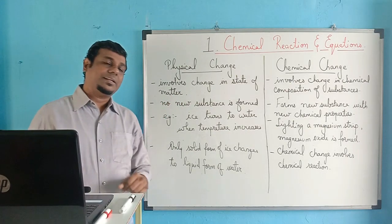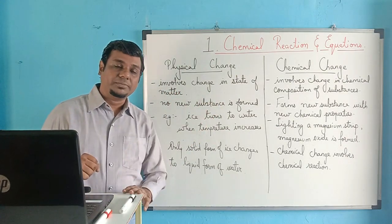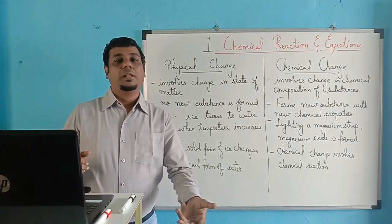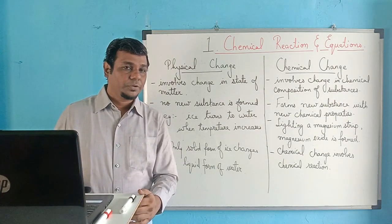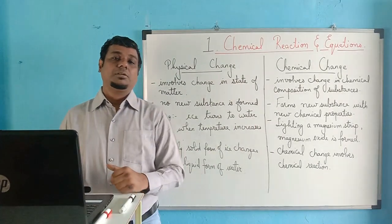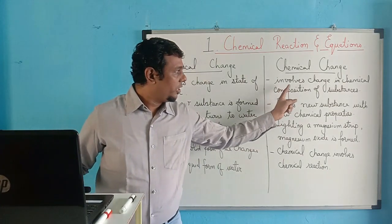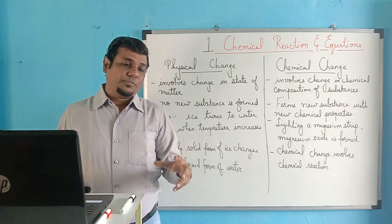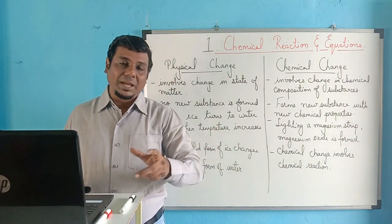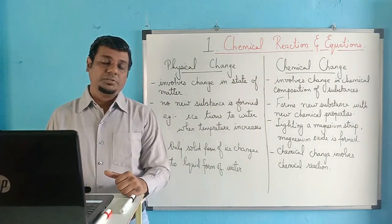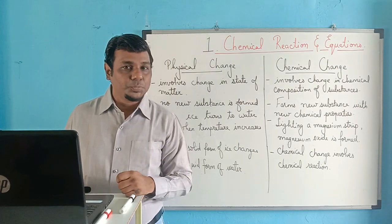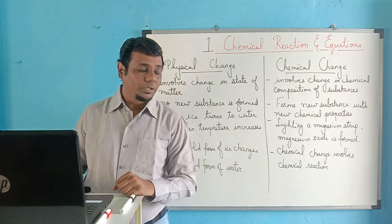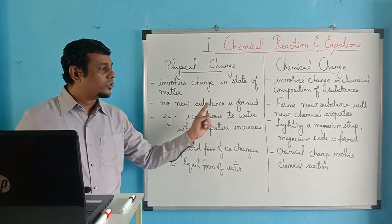As we have studied earlier in 9th standard, physical change involves change in state of matter. That means you only change a substance from one state to another — solid to liquid, liquid to gas. But in a chemical change, the total concept differs. It involves change in chemical composition of substances, meaning a new substance is formed. In physical change, no new substance is formed.